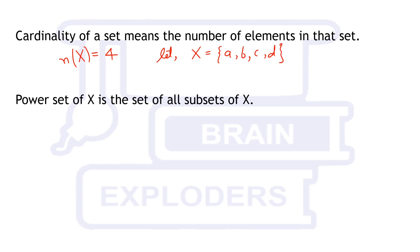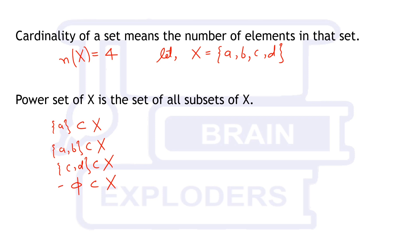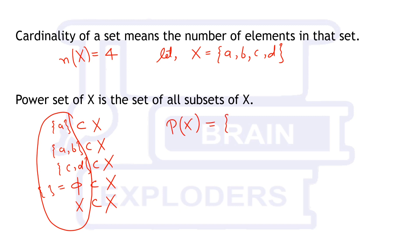Power set of X is the set of all subsets of X. For example, the set containing element a is a subset of X. The set containing a and b is a subset of X. The set {c, d} is also a subset of X. The empty set (phi) is also a subset of X, and X itself is also a subset of X. If we collect all these subsets into one set, that set is called the power set of X. So PX contains {a}, {b}, {a, b}, the empty set, X itself, and all other subsets of X.